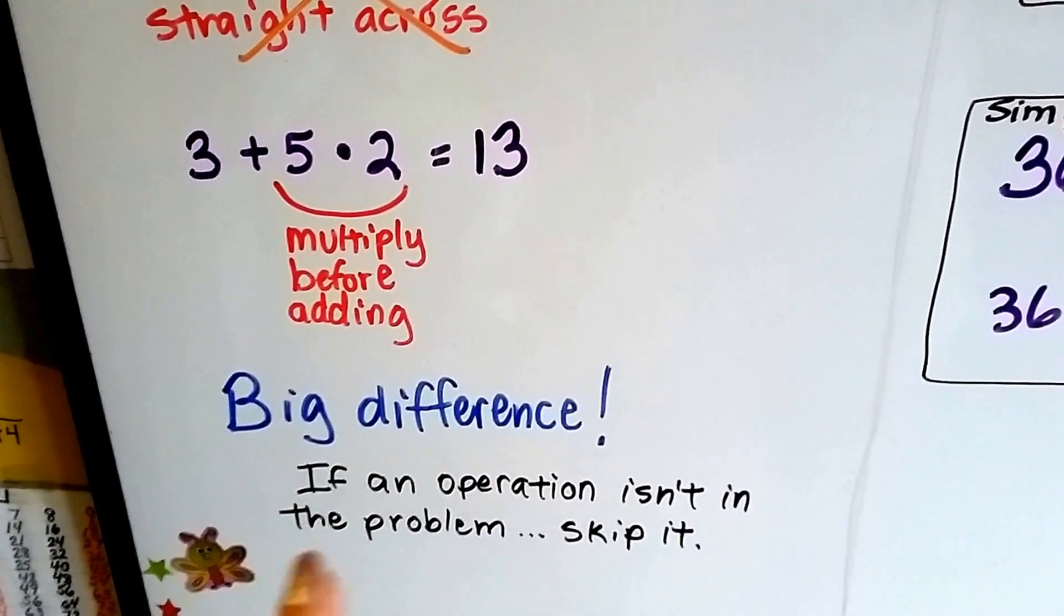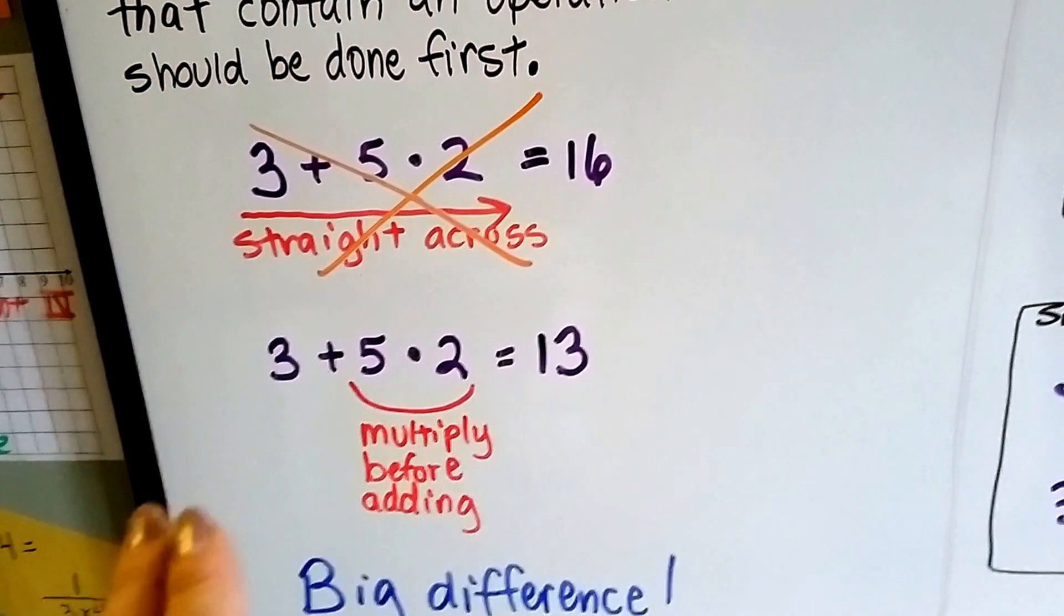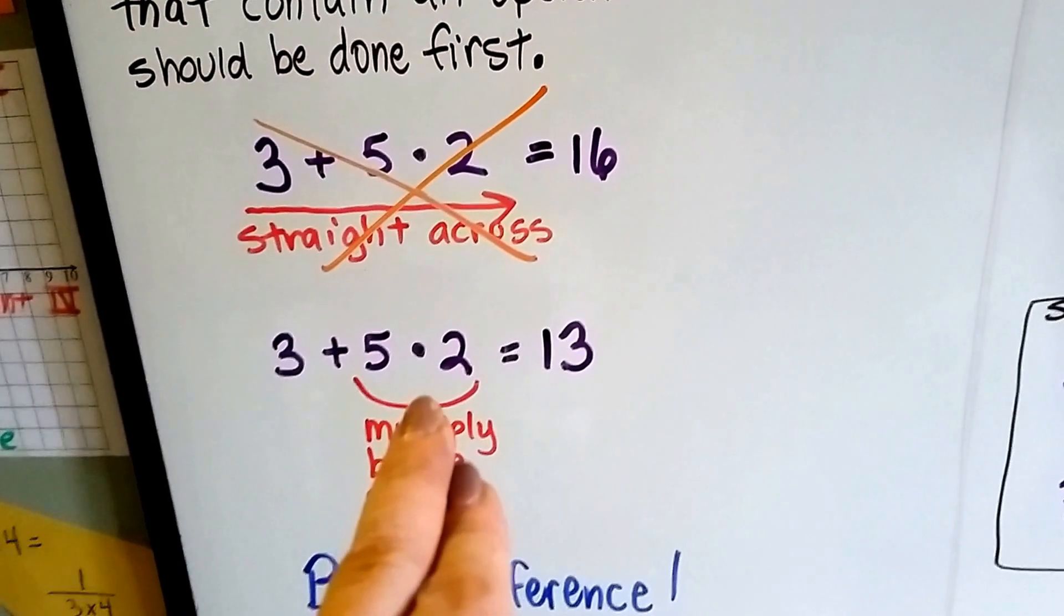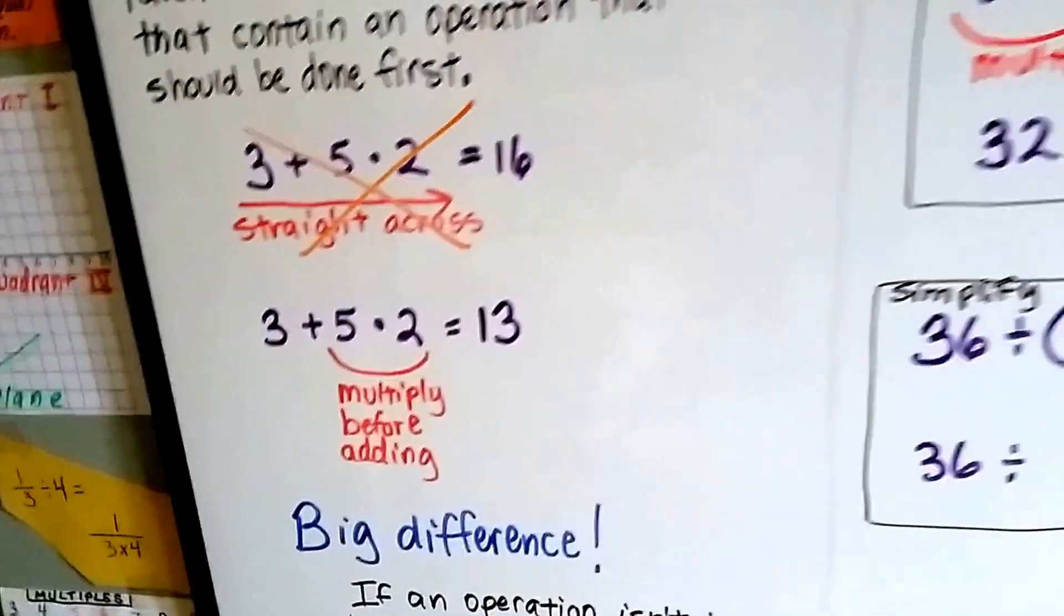If an operation isn't in the problem, we just skip it. There were no exponents, no parentheses, so we skipped those and went straight to multiplication. There was no division, so we skipped it and went to addition. There was no subtraction, we skipped it.